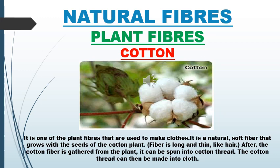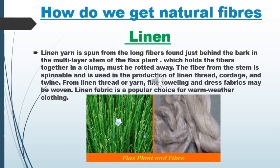This cotton thread can be made into cotton cloth. Linen: Linen fiber is produced from the stalk of the flax plant. These stems of the flax plant are allowed to rot, then they are beaten to separate the long fibers. These fibers are woven into linen cloth. The fibers are twisted or spun into strong threads called yarn, using a spinning wheel or spinning machine. Linen is used for warm weather clothing.